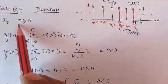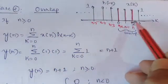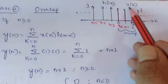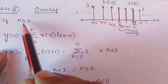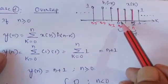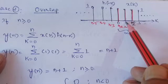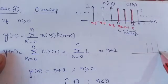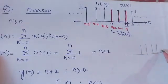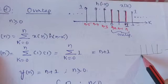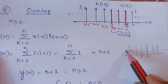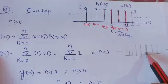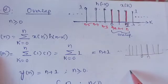Next is the overlap case: when n ≥ 0. The first signal X(k) is sketched from 0, 1, 2, 3 onwards. For the second signal, the reference point is at n, which is ≥ 0. Placing the second signal here, the overlap region has limits from 0 to n, with two samples overlapping.